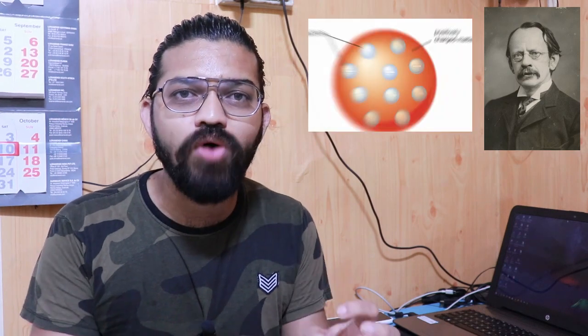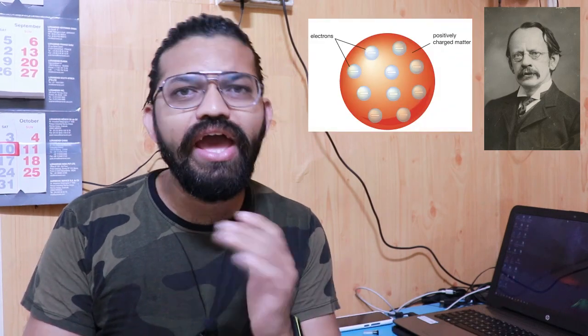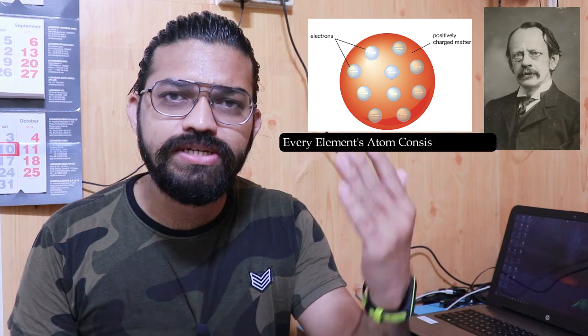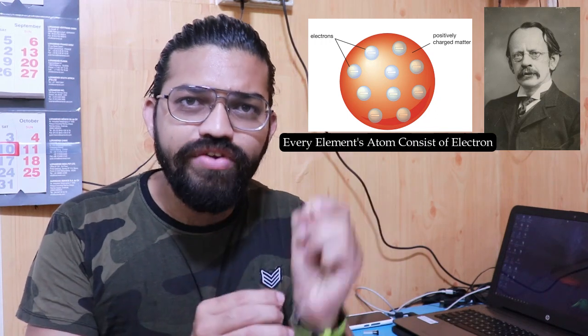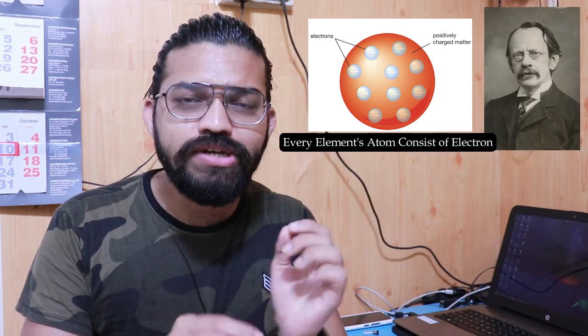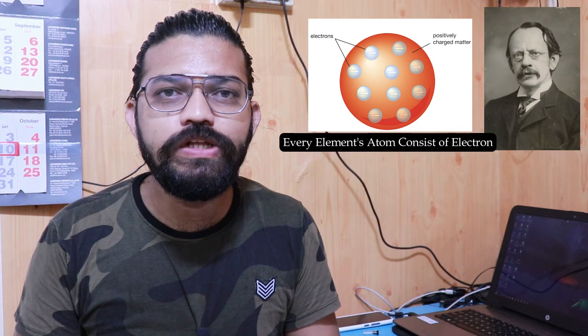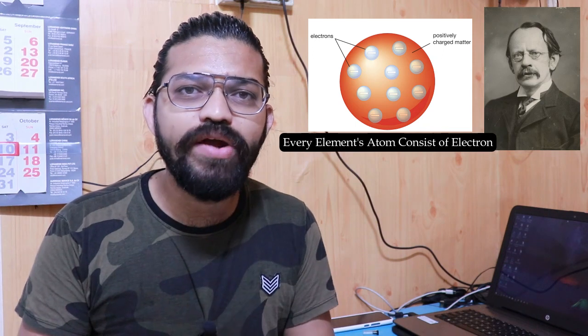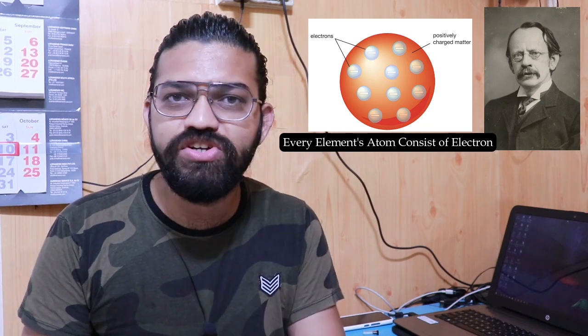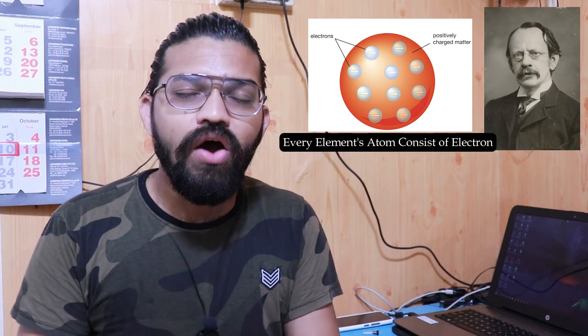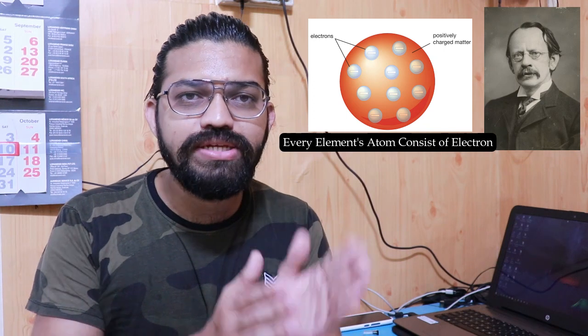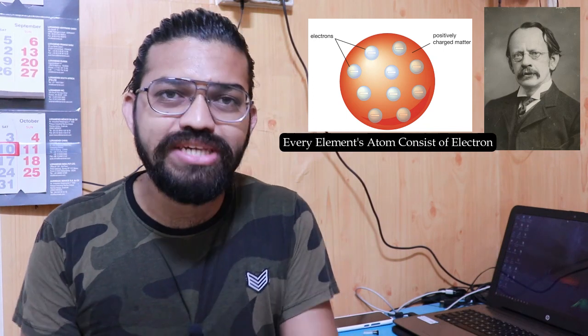In the late 19th century, Sir J.J. Thomson conducted a cathode experiment and he found out that atoms of any element consist of subatomic particles, and these subatomic particles carry negative charge. He then renamed these subatomic particles as electrons.